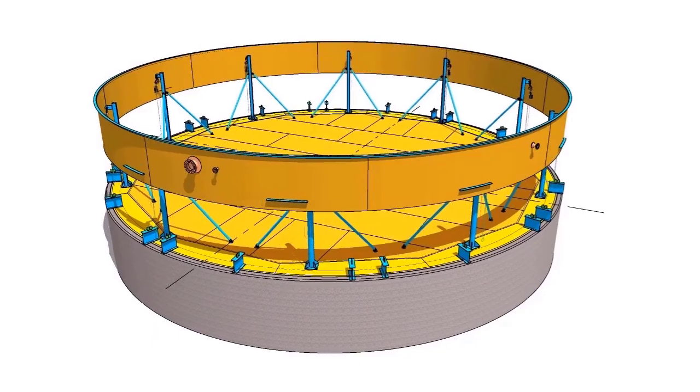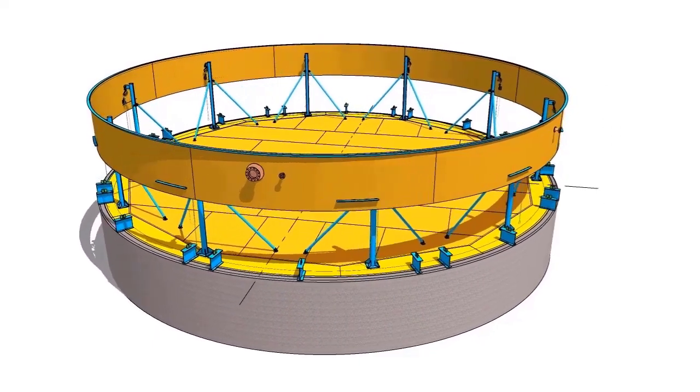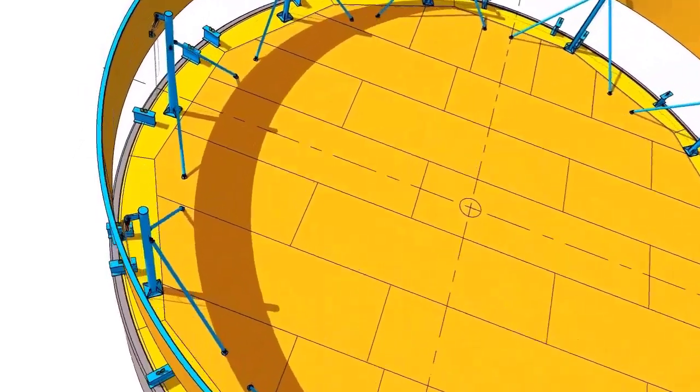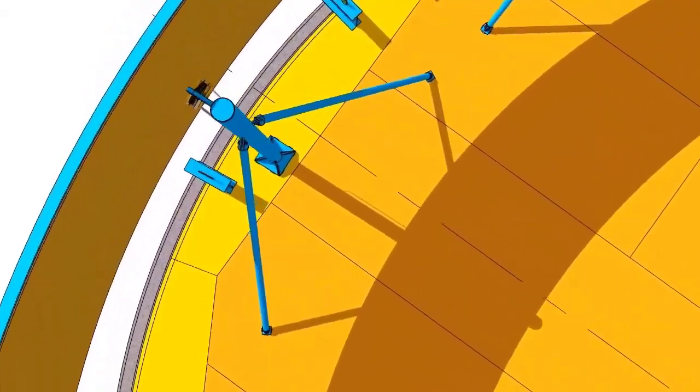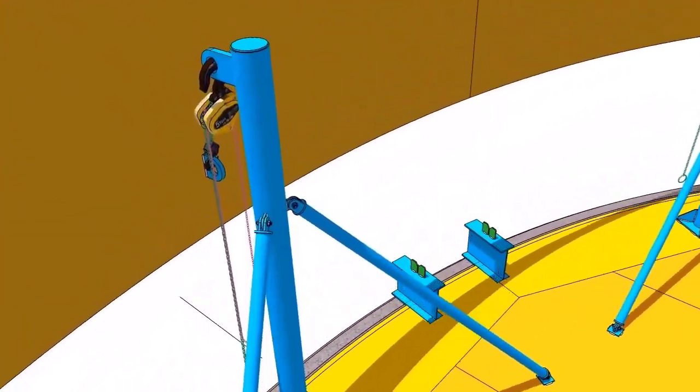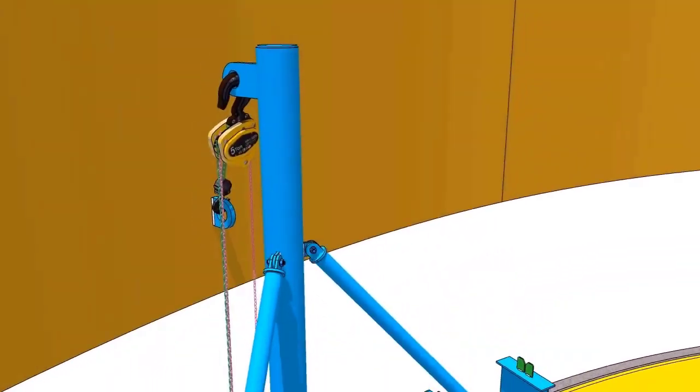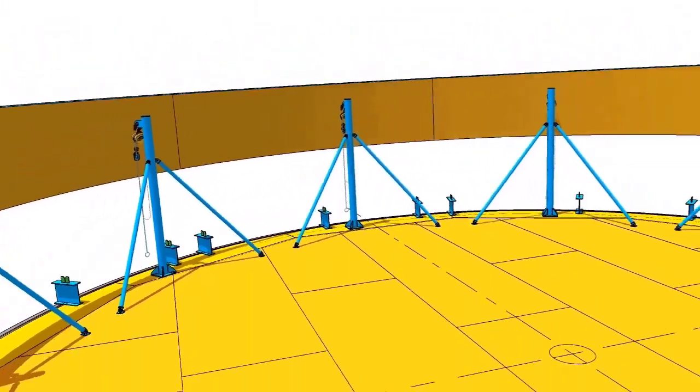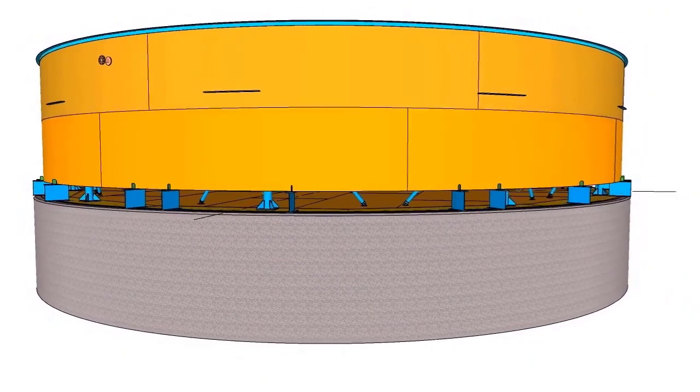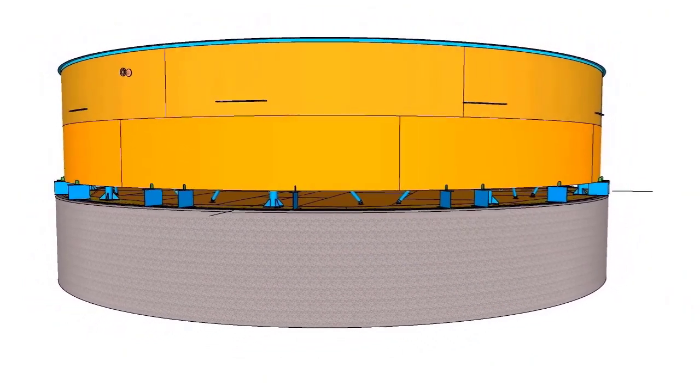Complete the welding of the roof structure, curb angle, shell, etc. Lift the shell to the required height. Install the next shell course. Complete the welding.